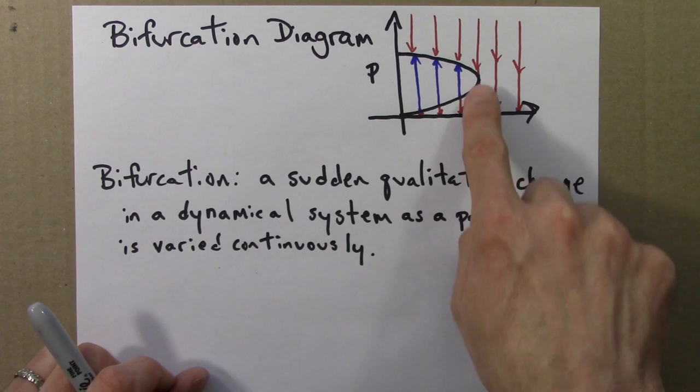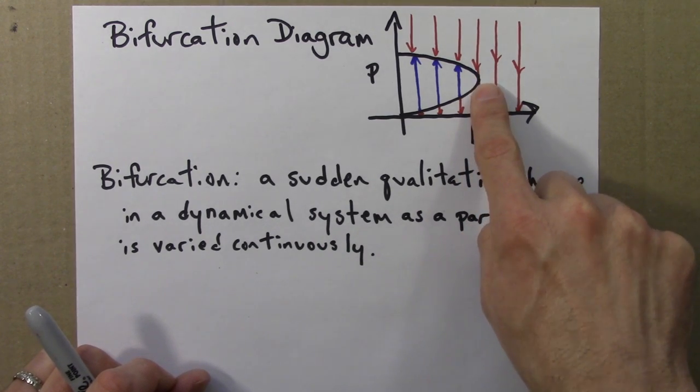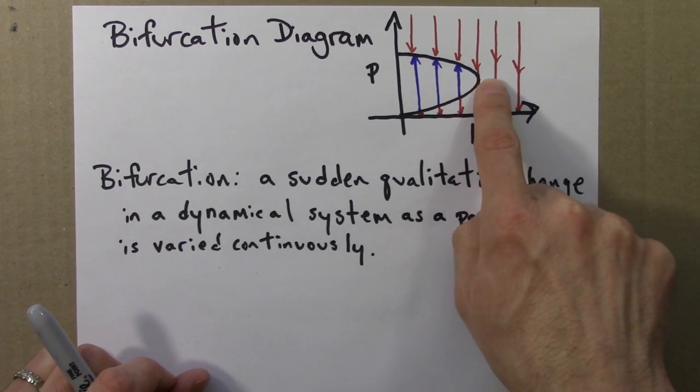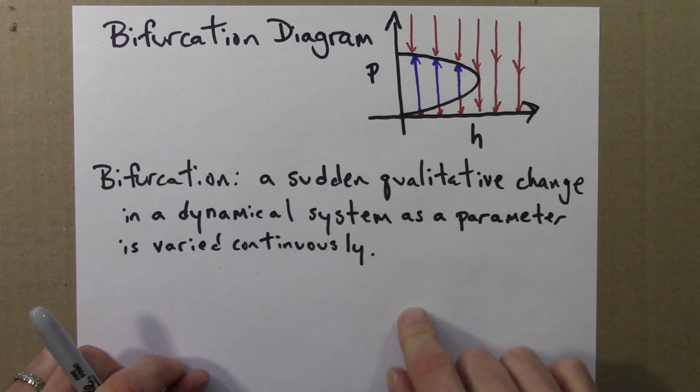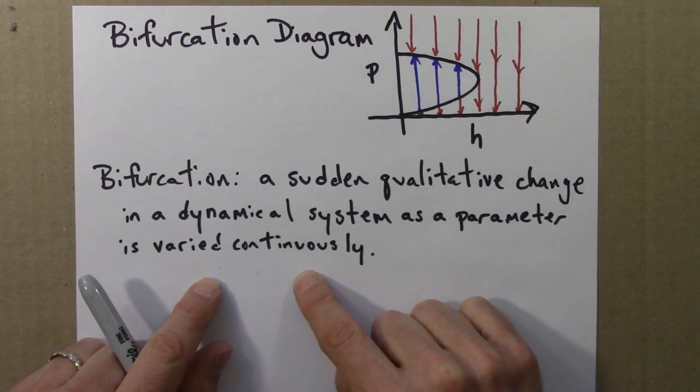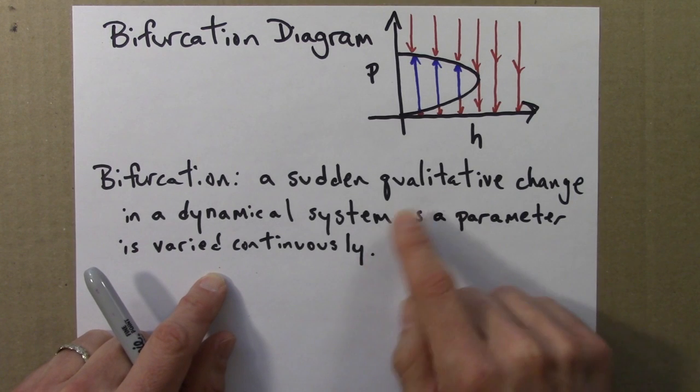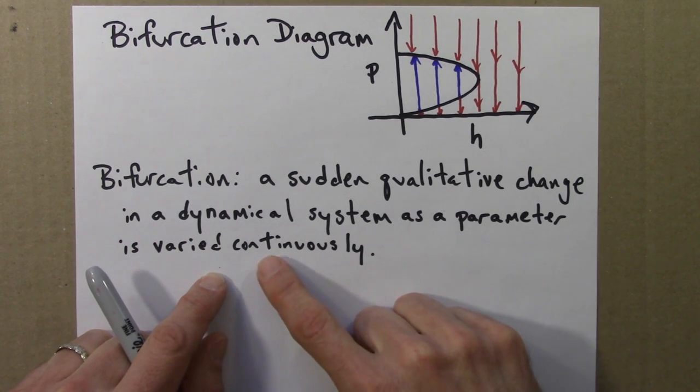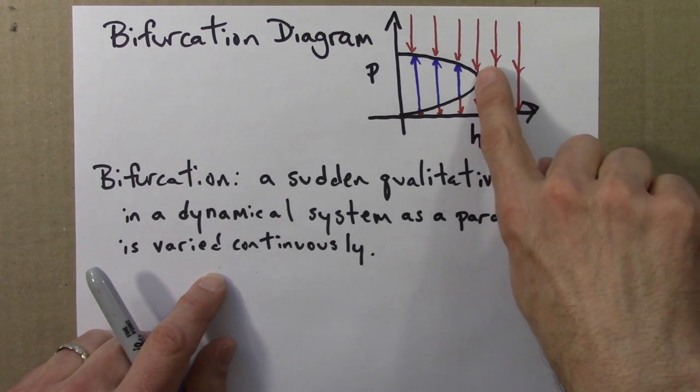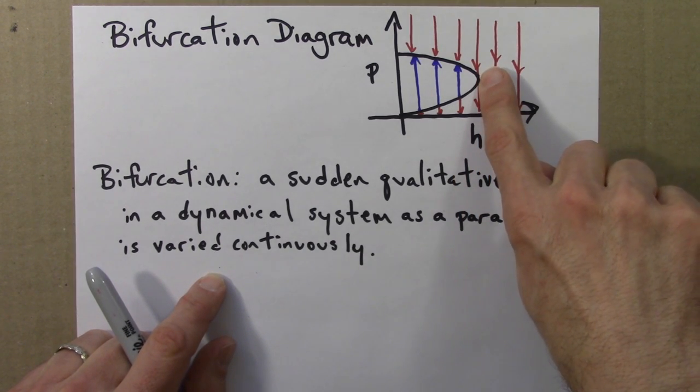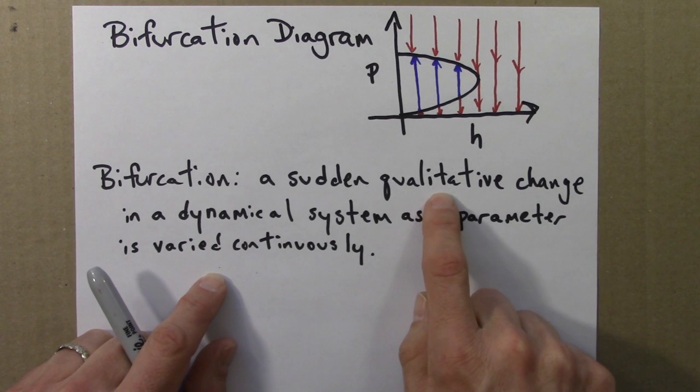And this change happens all of a sudden. We go from 2 on one side of the transition to 0 on the other. And so what I mean by varied continuously is that we get a jump in the qualitative behavior, the number of fixed points and their stability, without having to jump the parameter. So a very small change from one side of this transition to the other gives rise to this sudden qualitative change.